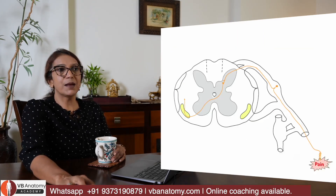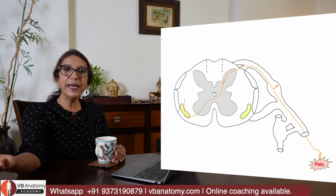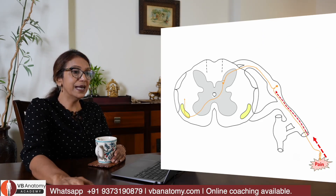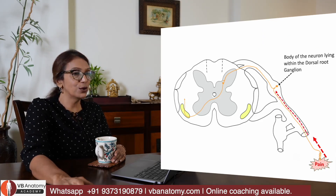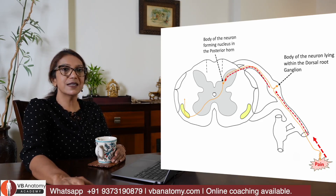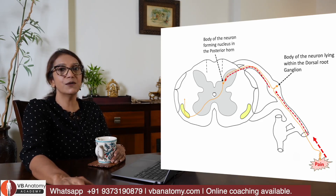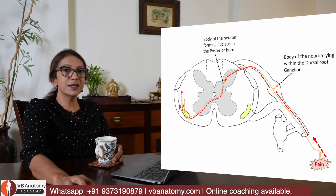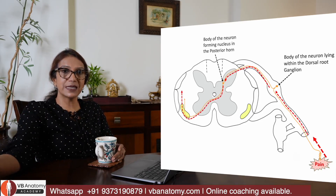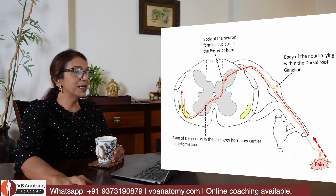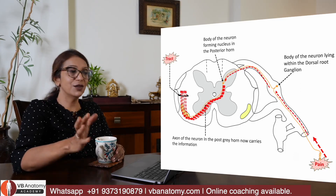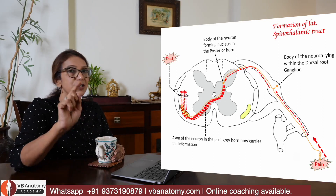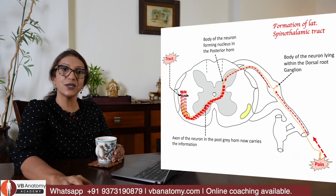Let us take for example what happens when you feel pain. Pain is picked up by a receptor, relayed into the first order neuron in the dorsal root ganglia. The axon carries this sensation into the posterior grey horn of the spinal cord and relays it there — end of first order neuron. The second order neuron now begins crossing over to the opposite, contralateral side of spinal cord and begins to ascend upwards in the form of a tract called the lateral spinothalamic tract, carrying pain and temperature sensation.